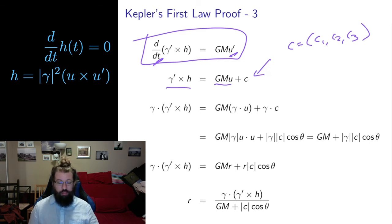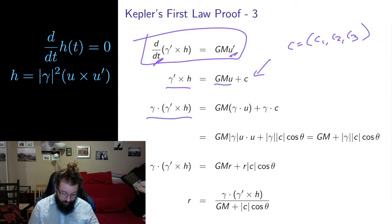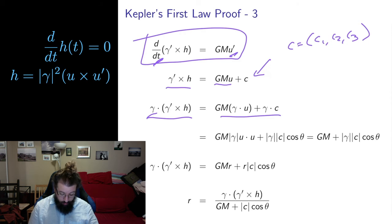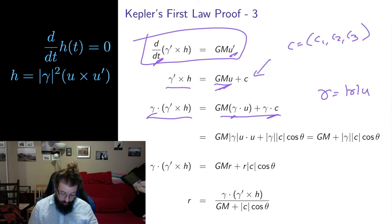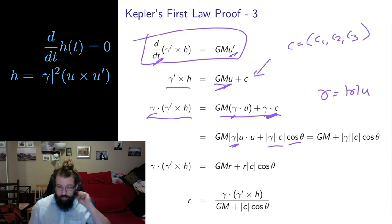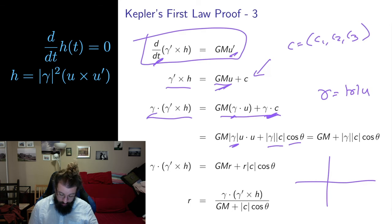Now I'm going to do something weird — totally out of the blue — and take the dot product of the whole equation with gamma. Distributing the dot product on the right gives a dot product with u and a dot product with the constants. Gamma can be written as length of gamma times u, and the dot product formula gives the lengths of two vectors times the cosine of the angle between them. This is where the cosine is introduced.